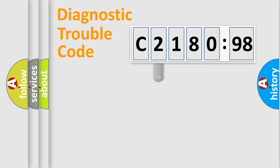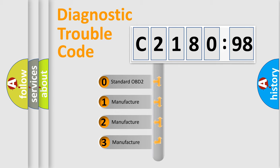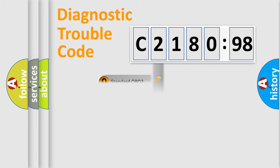Powertrain, Body, Chassis, Network. This distribution is defined in the first character code. If the second character is expressed as zero, it is a standardized error.